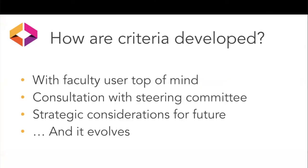So there are the four criteria. How are criteria developed? Our faculty user is really top of mind. We're thinking about those faculty workshops and want to make the experience of faculty who may be new to open education as easy as possible — to search and take a look at a book that may meet their needs. We consult with our steering committee whenever we want to revisit criteria. The criteria really do evolve: we used to accept books that included the no-derivatives clause, and then we changed that later on.